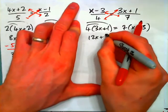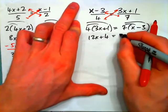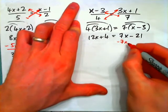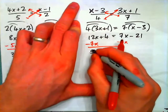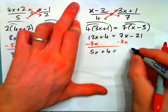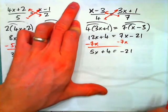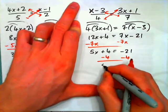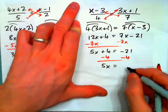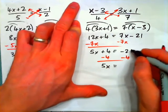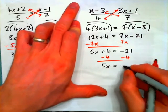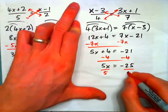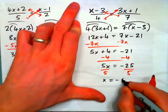Distribute, I get 12x plus 4 equals 7x minus 21. Subtract 7x from both sides. I get 5x plus 4 equals negative 21. Now, subtract 4 from both sides. And I have 5x equals negative 21 minus 4. That's 21 negatives combined with 4 negatives gives 25 negatives. Divide both sides by 5 and you should have x is negative 5.